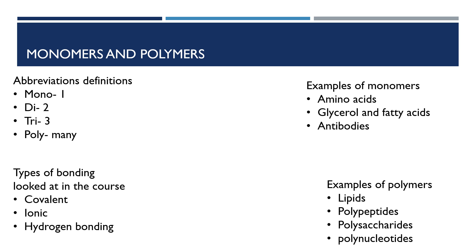Covalent is when two nonmetals join together to form a bond. Ionic is when a nonmetal and a metal react to form a bond, and hydrogen bonding is a bit more complex.